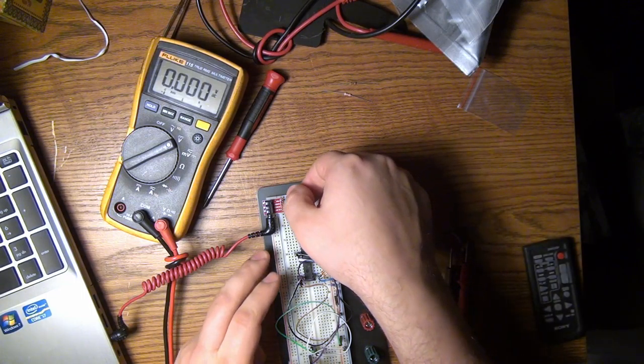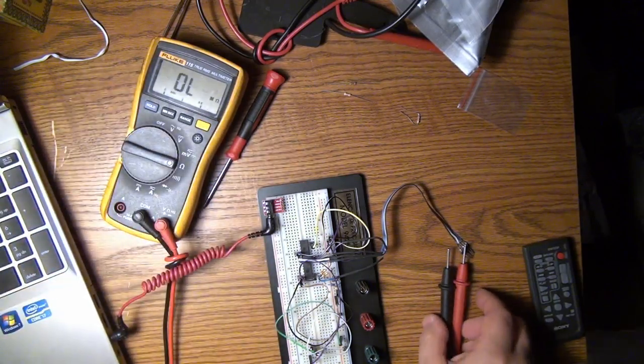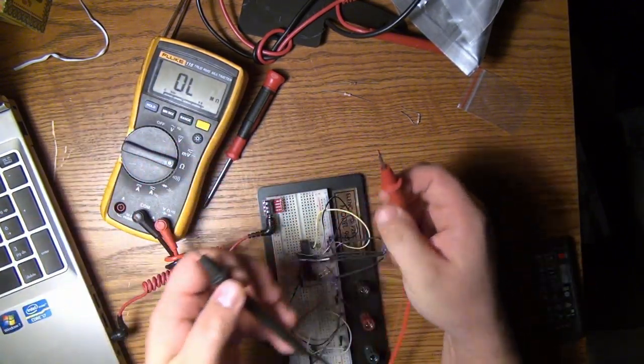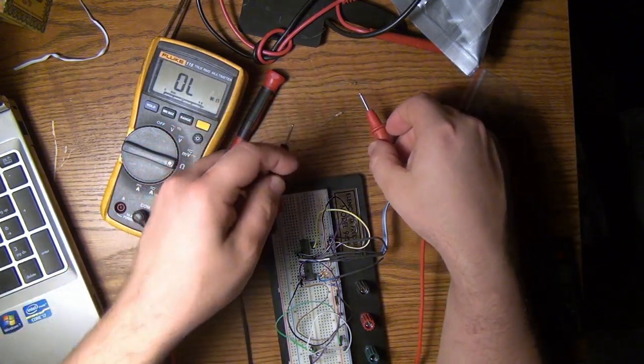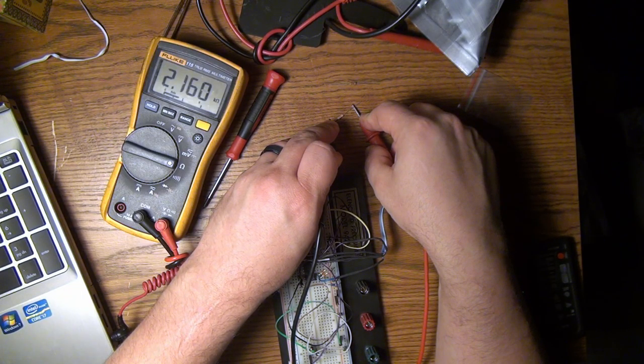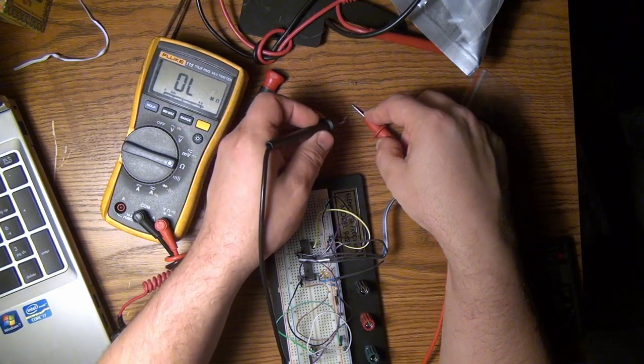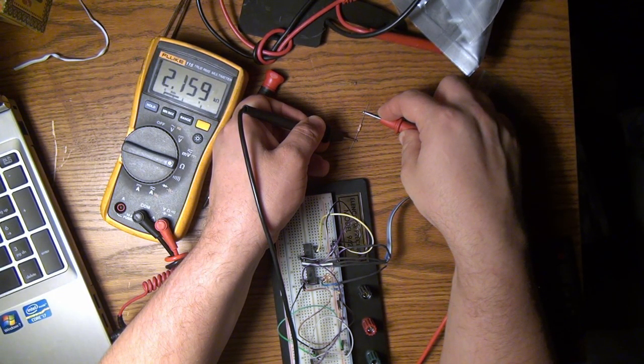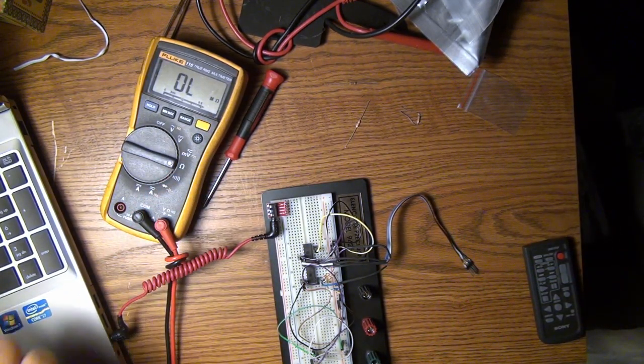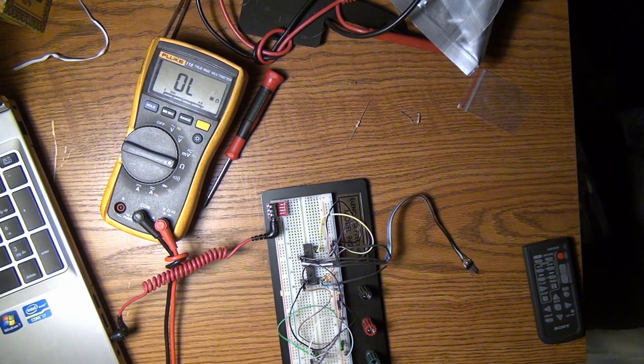Now we're going to do the next resistance value. Go ahead and pluck this guy out of the board, switch back over to ohms. This isn't the greatest meter for ohms but good enough. So this guy measures 2.159k.